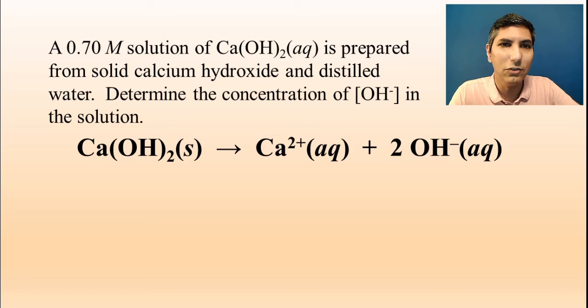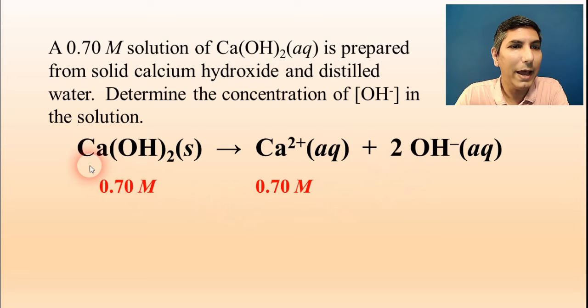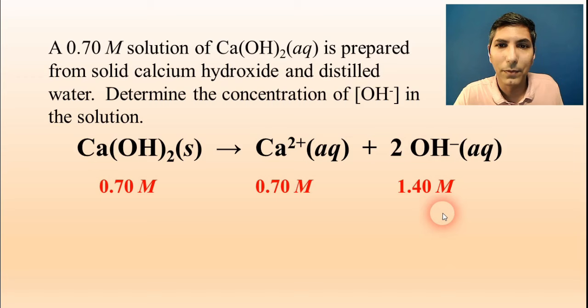So there's the equation for the dissociation of calcium hydroxide in aqueous solution. And we know that the concentration of calcium hydroxide is 0.70. So we can use simple stoichiometry to look at the mole ratios here. The calcium ion, it's a one to one ratio. So the calcium ion would also be 0.70 molar. Of course, that's not what the question is asking. It's asking, what's the concentration of hydroxide? Well, that is a one to two ratio. So the hydroxide concentration is going to be twice what the other concentrations are. It's 1.40 moles per liter, and that's the answer.